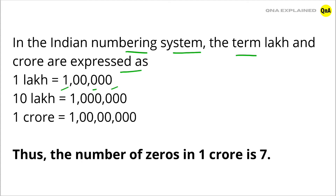Next is ten lakh. It has six zeros: 1, 0, 0, 0, 0, 0, 0. Next is one crore. How many zeros are there?